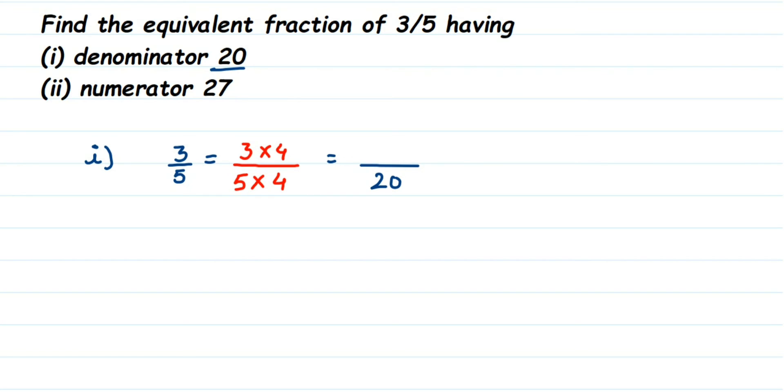So 3 times 4 is 12. So we will get here 12 by 20. So this is the required equivalent fraction of 3 by 5 where denominator is equal to 20.